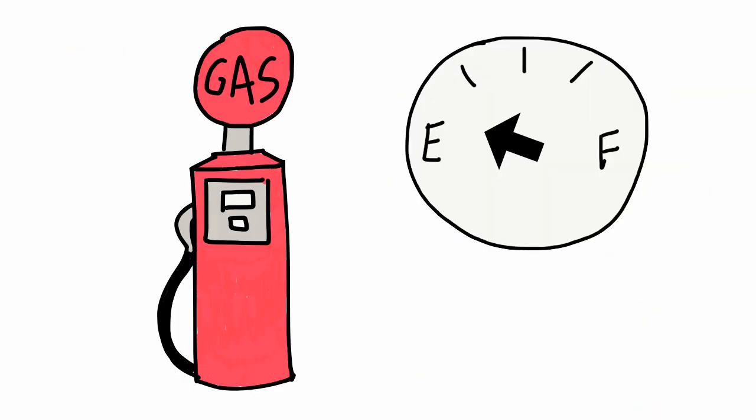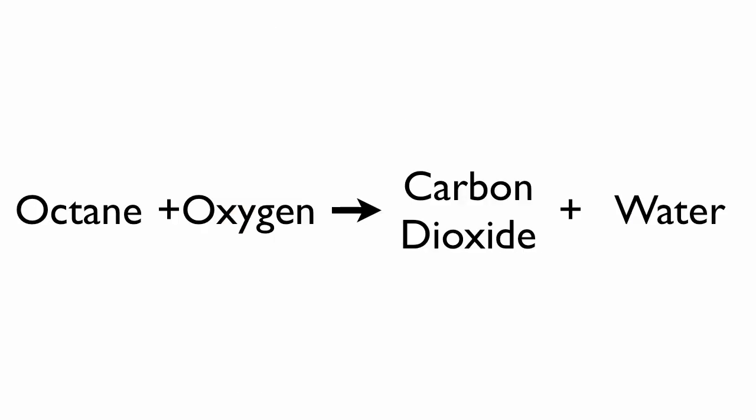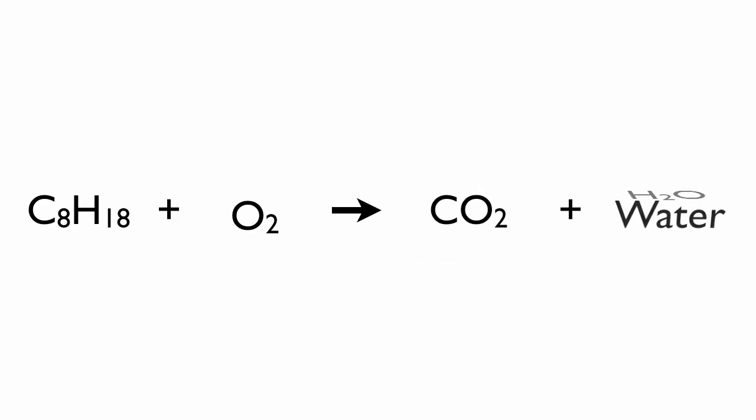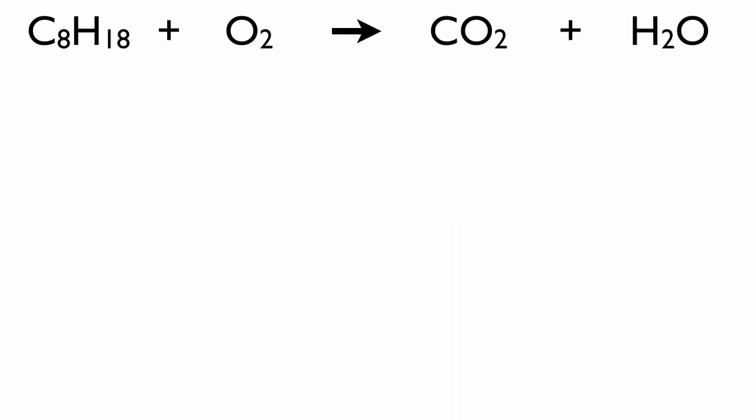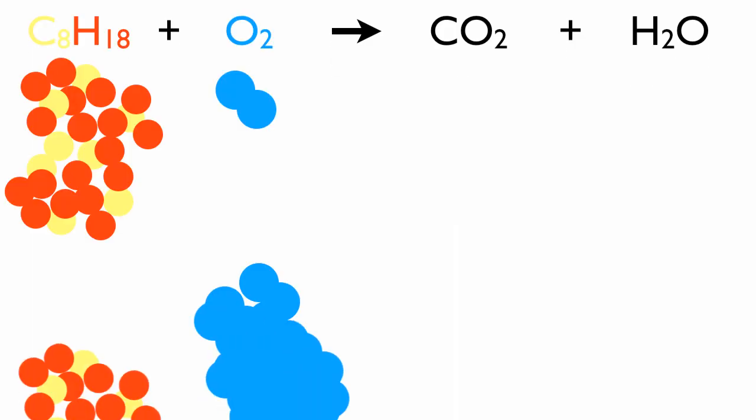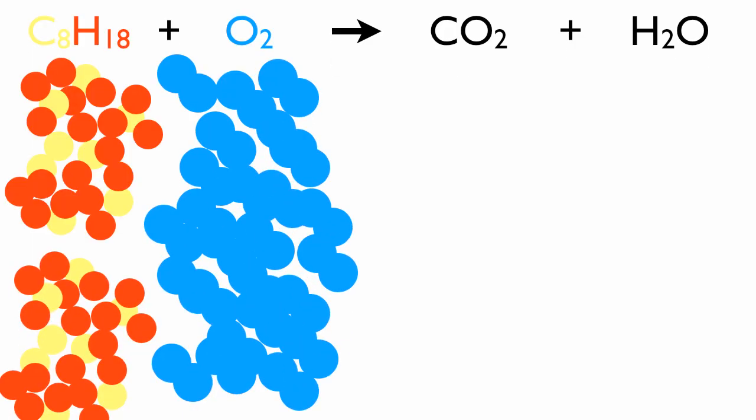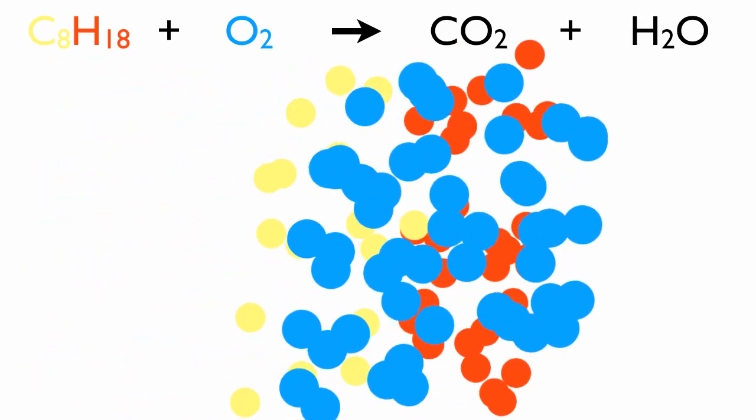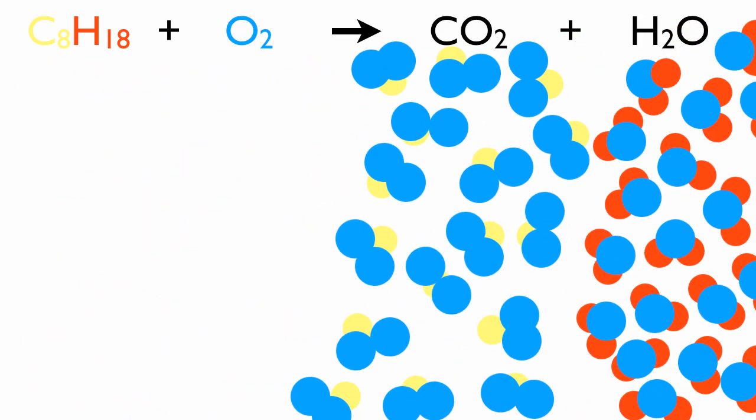Another chemical change happens when you drive your car. Gasoline enters your car as octane. Octane is C8H18. In your engine, oxygen is introduced and the octane changes into carbon dioxide and water. This is a chemical change because octane is no longer a molecule. Something new has been created.